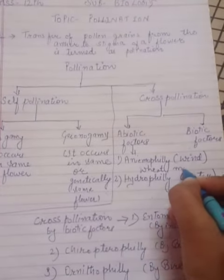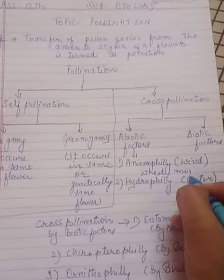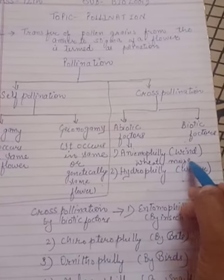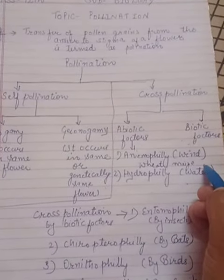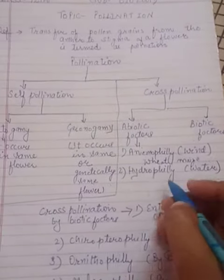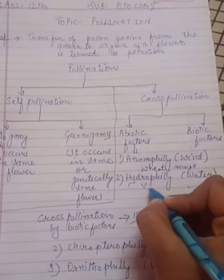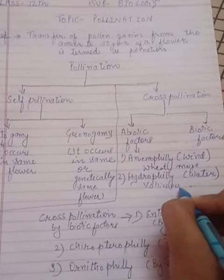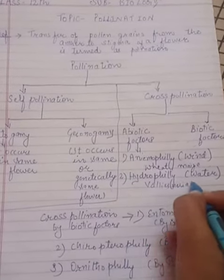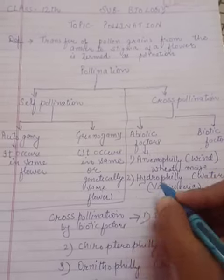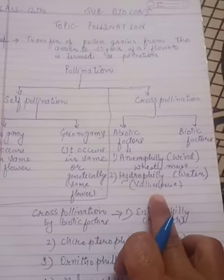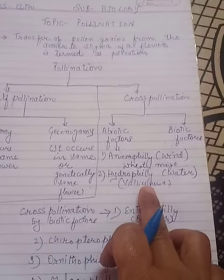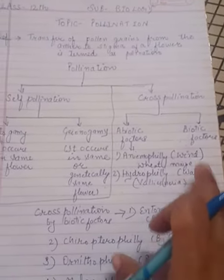In maize, pollination occurs by anemophily, where wind is the agent. An example of hydrophily is Vallisneria, in which cross-pollination occurs by water.